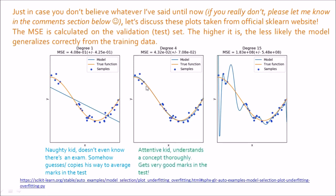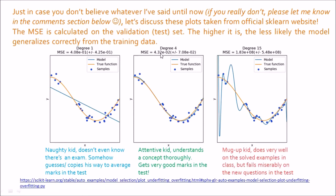For the true fit model, it is an attentive kid who understands the concept clearly and thus gets very good marks in the exam. He has understood the true underlying function — the orange curve — and built a model very close to the real function, achieving a very low mean squared error. For overfitting, it is a mug-up kid who does very well on the solved examples in class, but fails miserably on exam day because he has no idea how to solve new questions.